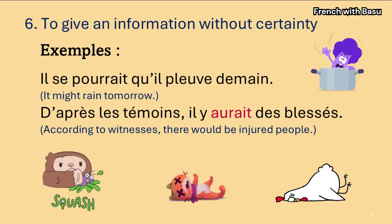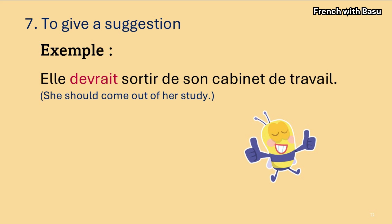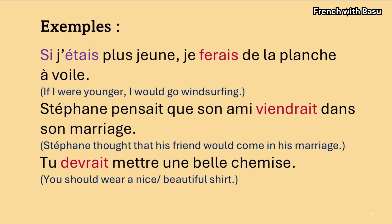Sixthly, le conditionnel can be used to give information without certainty. For example: Il se pourrait qu'il pleuve demain. D'après les témoins, il y aurait des blessés. Seventhly, when you want to give suggestions — however, the verb devoir can also be used in the present tense, depending on the context. For example: Elle devrait sortir de son cabinet de travail. Some more examples: Si j'étais plus jeune, je ferais de la planche à voile. Stéphane pensait que son ami viendrait dans son mariage. Tu devrais mettre une belle chemise.